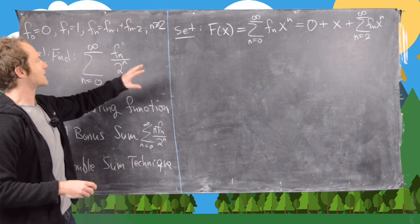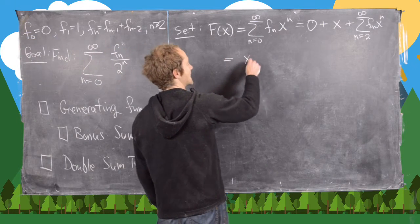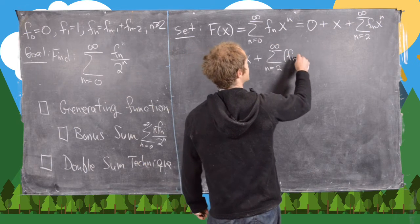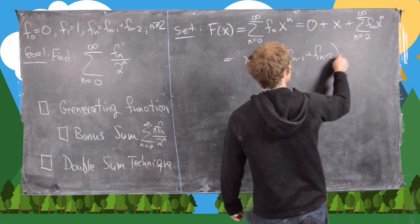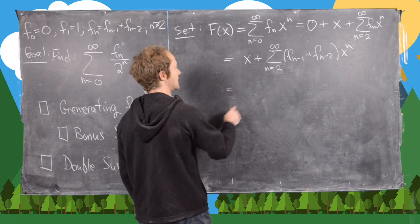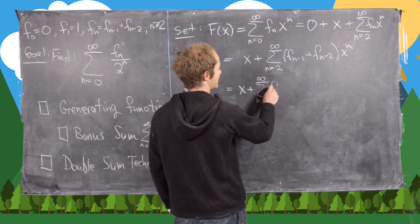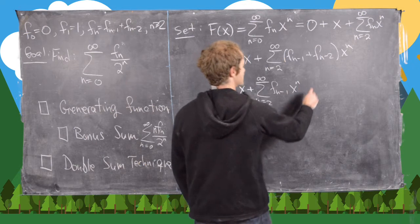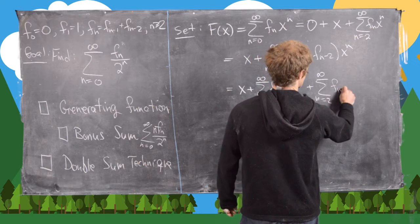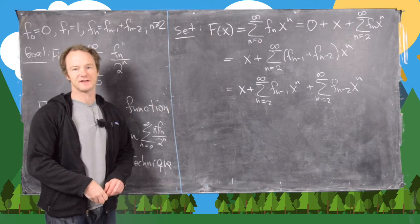Now we apply the recursion to that last sum, replacing f_n with f_{n-1} + f_{n-2}. We get x plus the sum from n=2 to infinity of (f_{n-1} + f_{n-2})·x^n, which we split into two separate sums.